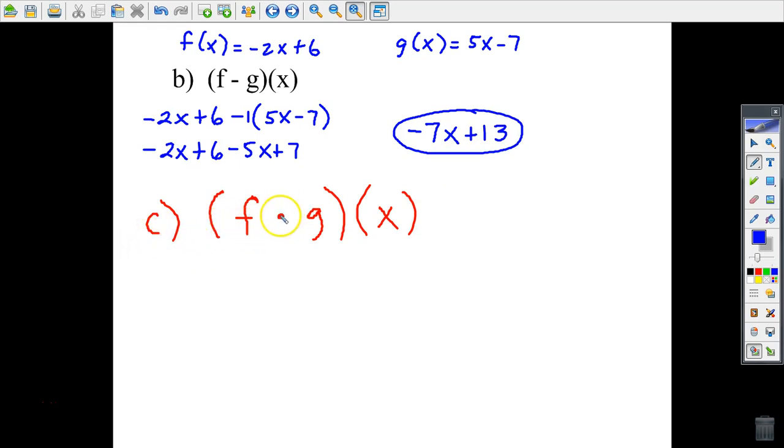Letter c involves multiplication of these same two functions. So we have the f function times the g function. This should look familiar to you. When you multiply two binomials together, we're going to use the FOIL method. First terms together: negative 10x squared. Outer terms together would be positive 14x. Inner terms together would be positive 30x.